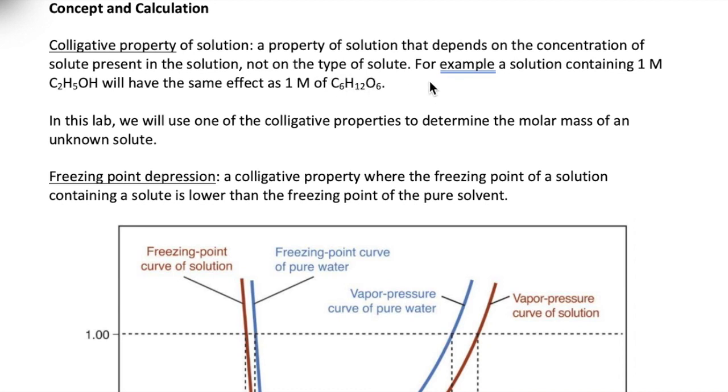For example, if we have two one molar solutions such as ethanol and glucose, they will have the same colligative property despite being composed of different molecules.